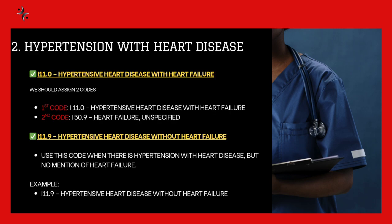If it is hypertension with heart disease with heart failure, the first code will be I11 for hypertension with heart disease, and the second code should be for heart failure. The next one is I11.9 — hypertension heart disease without heart failure. You need to assign only one code, I11.9, with no additional codes required.